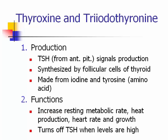The functions of thyroxine and triiodothyronine are to increase the resting metabolic rate, turn on heat production, increase heart rate, and promote growth. When levels get too high, they turn off TSH — that's the negative feedback loop we discussed.